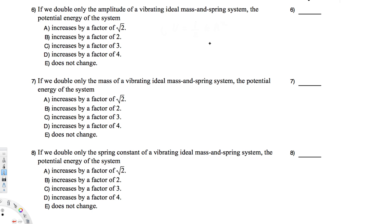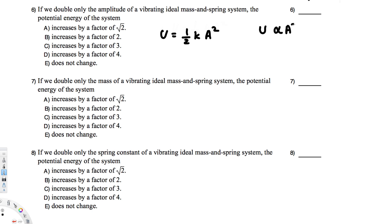For a spring system, the potential energy equation is U = ½kA². We want to know the relationship between U and A, where U is potential energy and A is amplitude. They are asking: if we double the amplitude, what will happen to U? U is directly proportional to A².